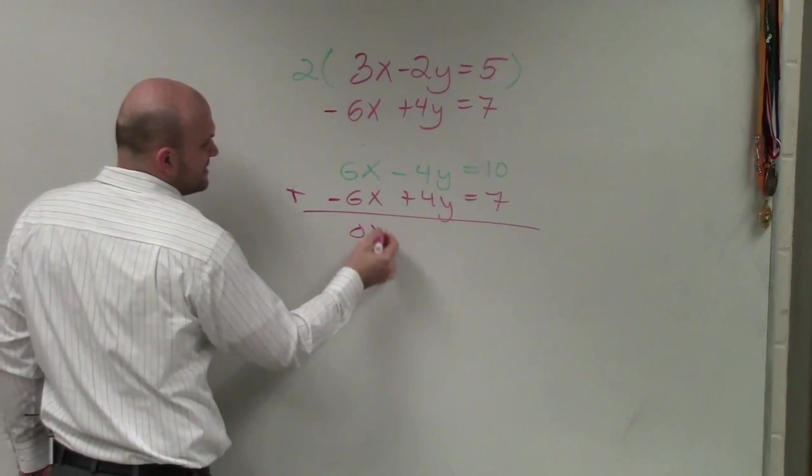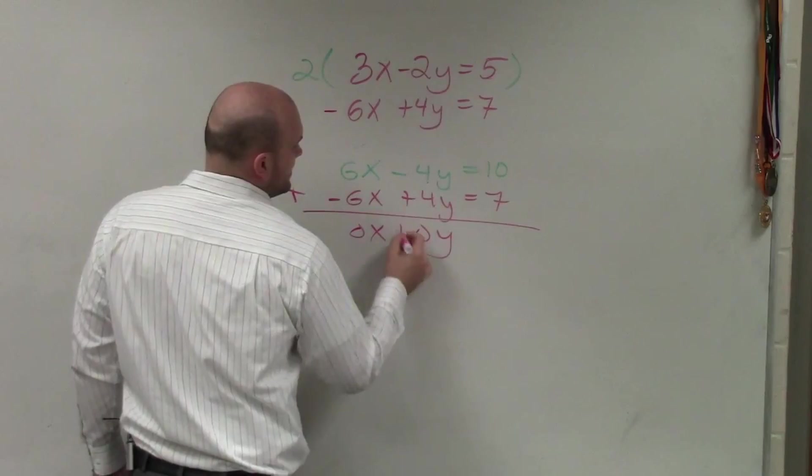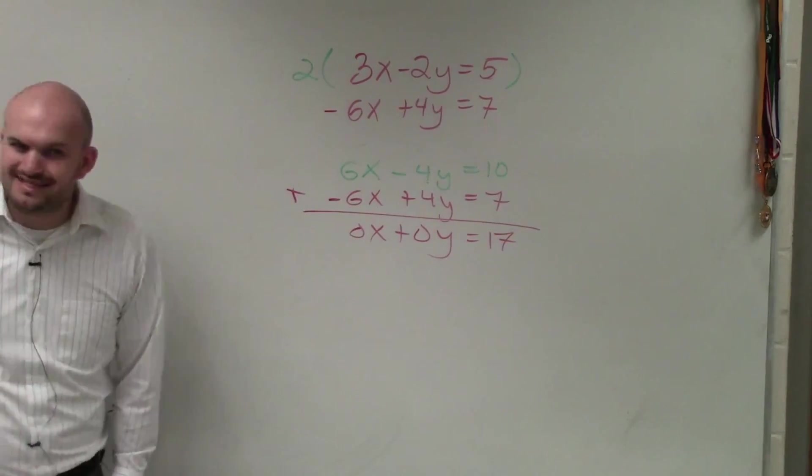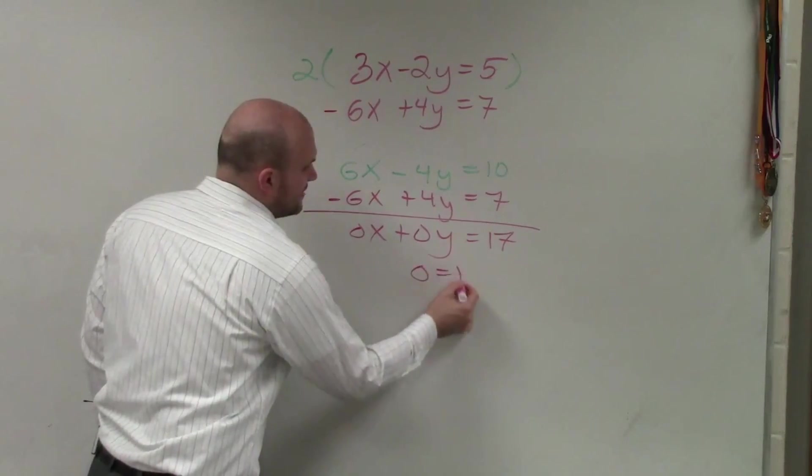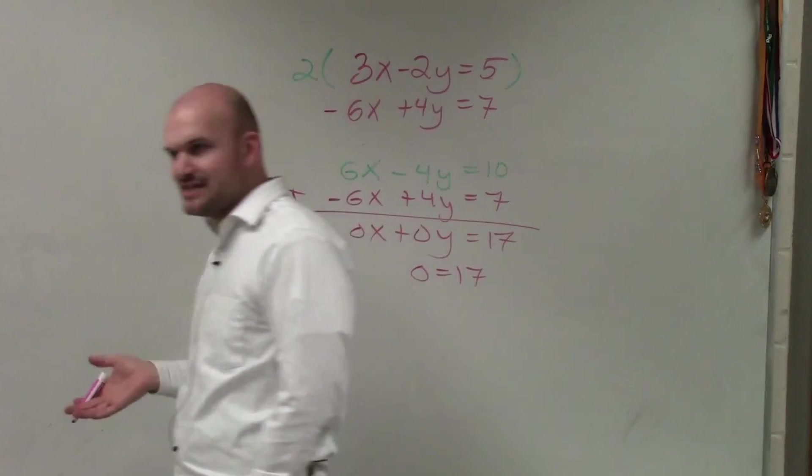6x plus negative 6x is 0x. Negative 4y plus positive 4y is 0y equals 17. 0x plus 0y is 0 equals 17. So I look at that, and I determine, all right, this system of equations has a false statement.